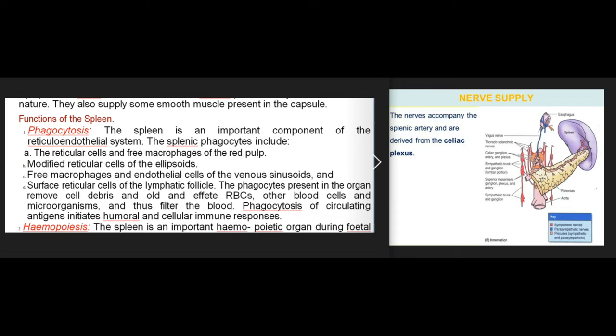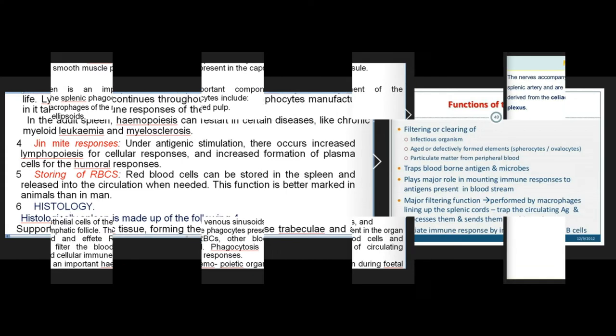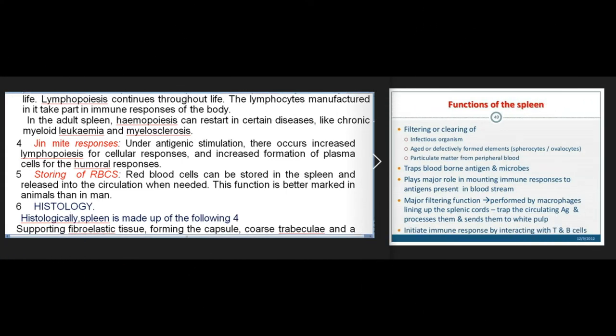2. Hemopoiesis: the spleen is an important hemopoietic organ during fetal life. Lymphopoiesis continues throughout life; lymphocytes manufactured in the spleen take part in immune responses. In the adult, hemopoiesis can restart in diseases like chronic myeloid leukemia and myelosclerosis. Under antigenic stimulation there is increased lymphopoiesis for cellular responses and increased formation of plasma cells for humoral responses.